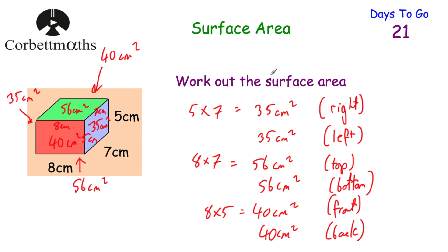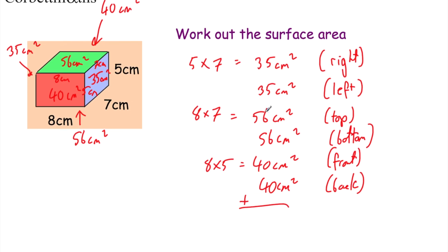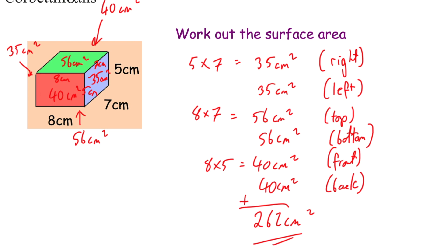To find the total surface area we can just add them all up. So we're going to do 35 + 35 + 56 + 56 + 40 + 40. Some people do 35 + 56 + 40 and then just double it, but adding them all up gives us 262 centimetres squared. That's the total surface area of this cuboid. If you've got the Corbettmaths revision cards, there's a card on surface area and it also shows 262 centimetres squared — well done if you got that.